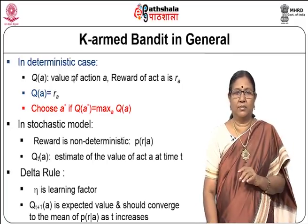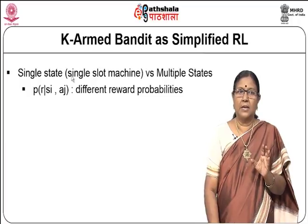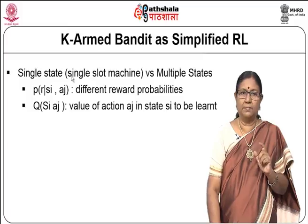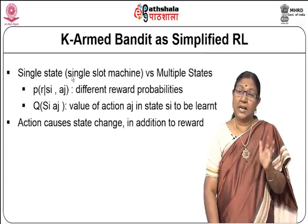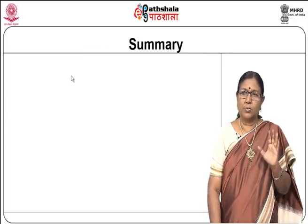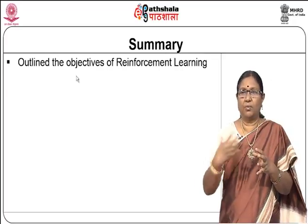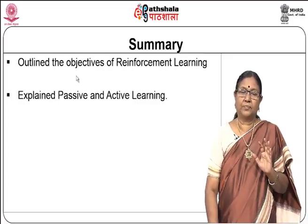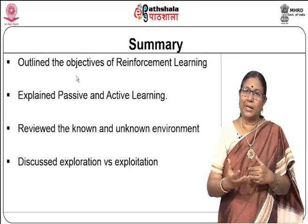Initially you start with unknown values and then they converge. This is essentially a simplified reinforcement learning: a single-state slot machine versus the full multi-state RL problem, where the reward depends on the state and the action. Q(S_i, A_j) is the value of action A_j in state s_i — the action causes a state change in addition to a reward, and rewards are not necessarily immediate. In this module, we have outlined the objectives of reinforcement learning, explained passive and active learning, discussed known and unknown environments, and the exploration versus exploitation dilemma using the k-bandits problem. In the next module, we will discuss certain techniques in more detail.